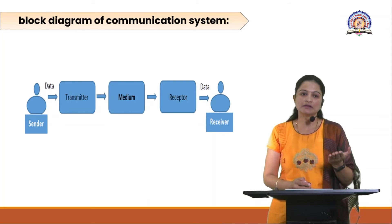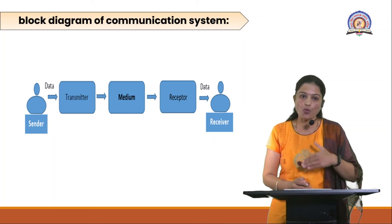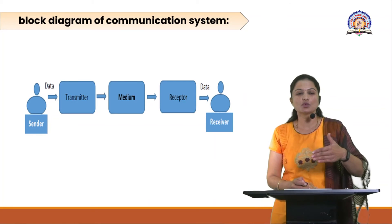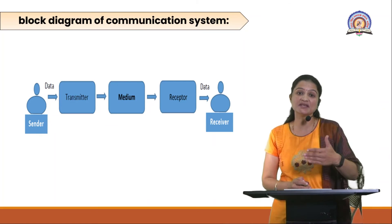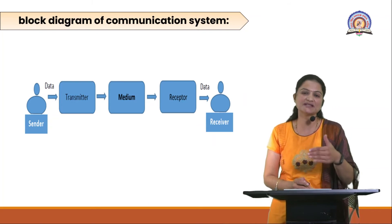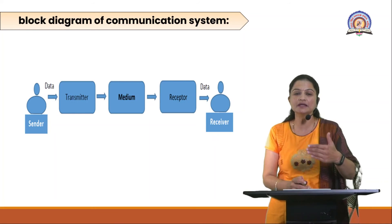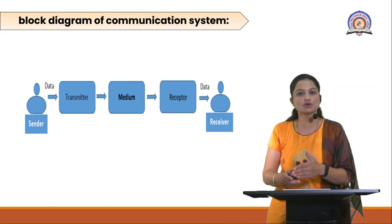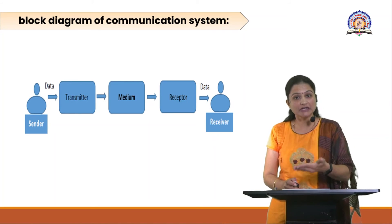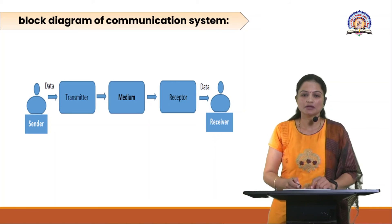In the block diagram of a communication system, there is one sender and one receiver. The sender sends the data, and then the transmitter encodes that data — changing it from one format to another. This is needed because the medium changes for transferring the data, and also for safety and security purposes. The sender sends the data, the transmitter encodes it, then through the medium the data travels from source to destination, the receptor receives and decodes it back into the original format, and finally it is received by the receiver.